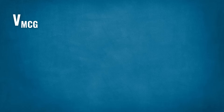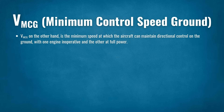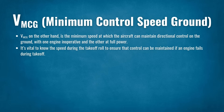VMCG, or Minimum Control Speed on the Ground, is the minimum speed at which the aircraft can maintain directional control on the ground with one engine inoperative and the other at full power. It's vital to know this speed during the takeoff roll to ensure that control can be maintained if an engine fails during takeoff.